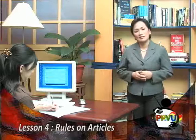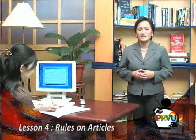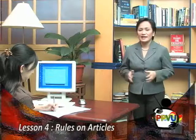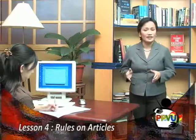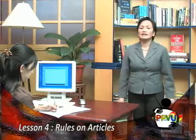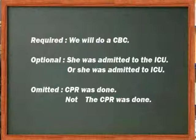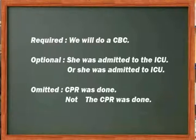The transcriptionist is attempting to achieve some consistency within the document. The use of articles with abbreviations varies — sometimes the article is required, sometimes optional, and sometimes should be omitted. For example: required — 'We will do a CBC'; optional — 'She was admitted to the ICU' or 'She was admitted to ICU'; omitted — 'CPR was done,' not 'The CPR was done.'